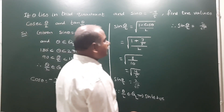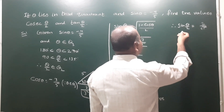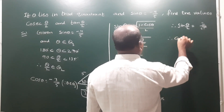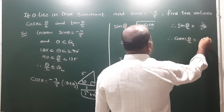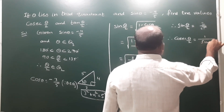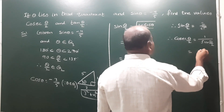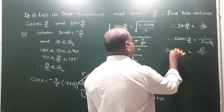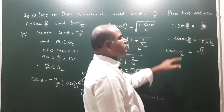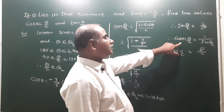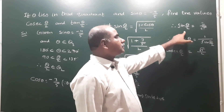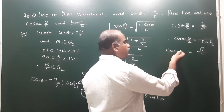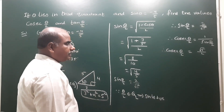Next, we find cosec(theta/2). Cosec(theta/2) is the reciprocal of sin(theta/2), so cosec(theta/2) equals 1 divided by (2 by root 5), which equals root 5 by 2. This is the value of cosec(theta/2).